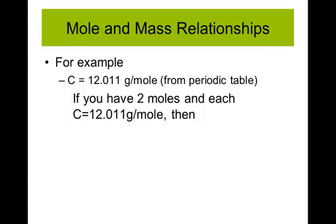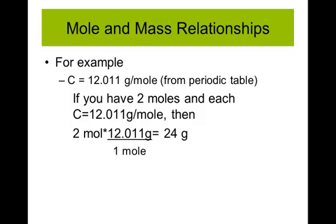So if we had two moles of carbon and each one was 12.011, we could simply take two times that mass off the periodic table, and that would tell us that we had about 24 grams.